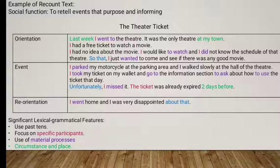From the example of recount text, you can see the generic structure. There are three generic structures. The first is orientation, which gives the readers the background information needed to understand the text, such as who was involved, where it happened, and when it happened. The second is events: a series of events ordered in a chronological sequence.